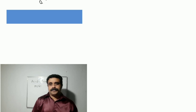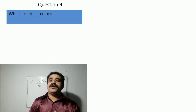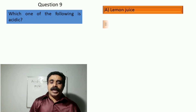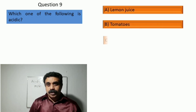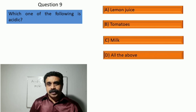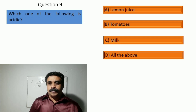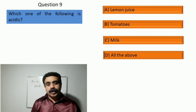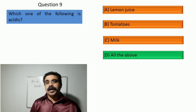Question number nine: which one of the following is acidic? Option A: lime juice, option B: tomatoes, option C: milk, option D: all of the above. The answer is option D, all of the above.